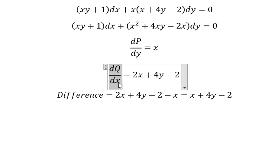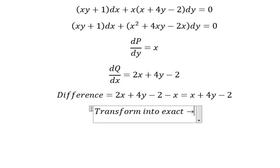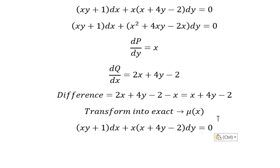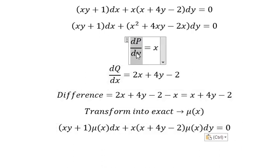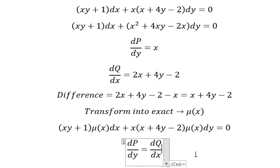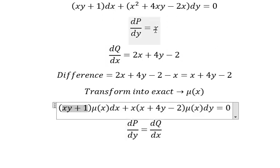So that should be this one, that means we need to select about moving S. Now we need to transform into exact form. I select about moving S, that means we need to multiply both sides by this integrating factor. So we want this one equals to this one. We need to do the first derivative of B with respect to Y, so we have S.